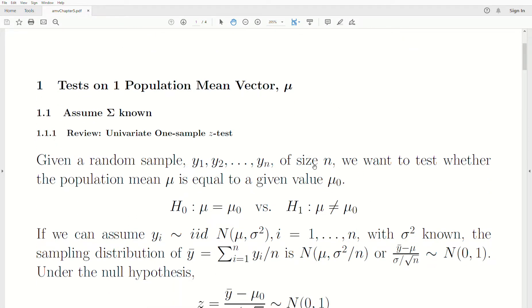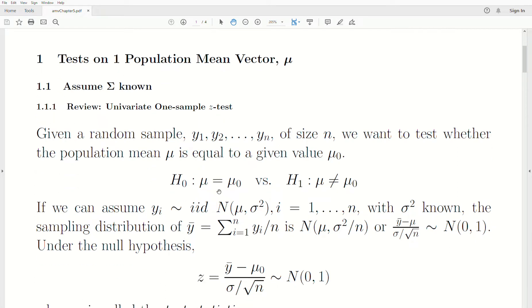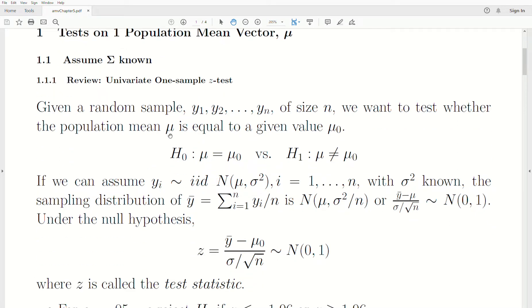So we're given a random sample of size n, and we want to test whether μ is equal to some value, that's the null hypothesis, and the alternative is that it's not equal to that value. We assume that the data are IID normal random variables, mean μ and variance σ². IID stands for independent, identically distributed normal random variables.